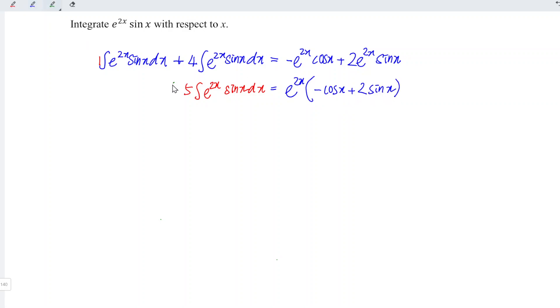And what we have to do next is to divide both sides by 5, the constant here. So 5 over 5, we obtain 1. So 1 times anything, we get back the same thing. So we have integrate e to the power of 2x times sin x with respect to x.